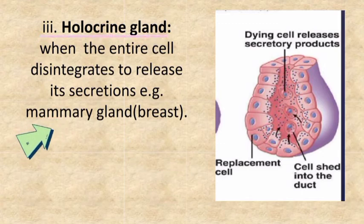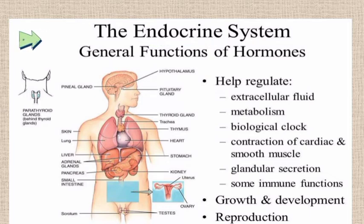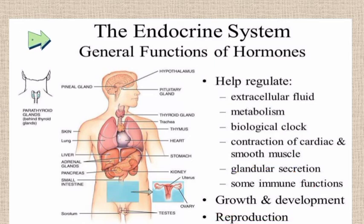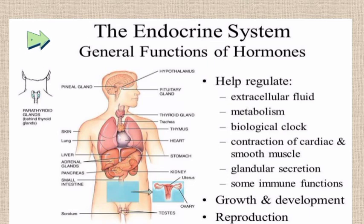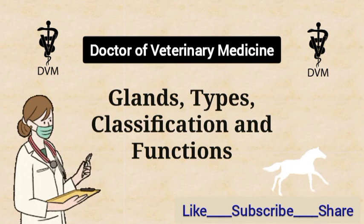The general functions of hormones secreted from the endocrine system include growth and development, reproduction, regulation of extracellular fluid, metabolism, biological clock, and secretions. Thank you for watching; for any questions, comment below.